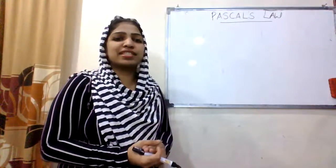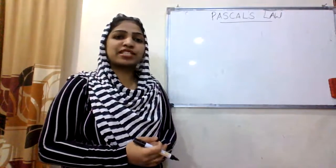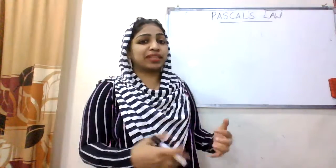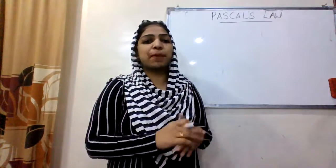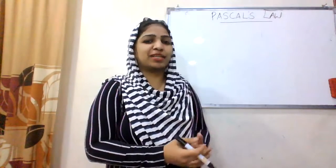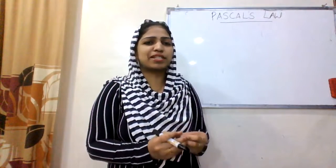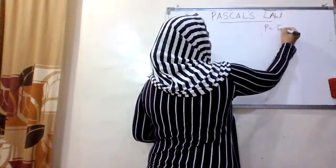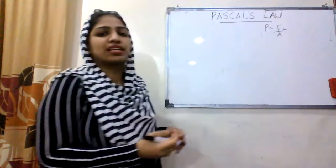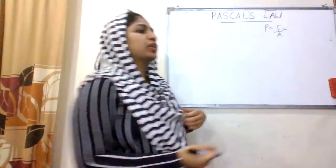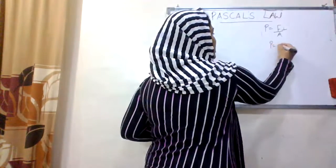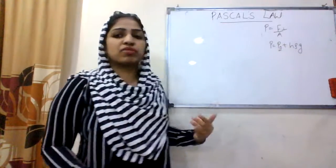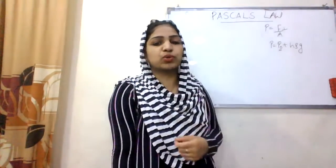We are going to discuss the basics of pressure. What we are going to discuss about pressure is the very important topic of Pascal's law. Pressure is thrust divided by area. Thrust means force — perpendicular force. Pressure due to a fluid column is given by P equal to P₀ plus Hρg, where P₀ is the atmospheric pressure and Hρg is the pressure due to the fluid column.